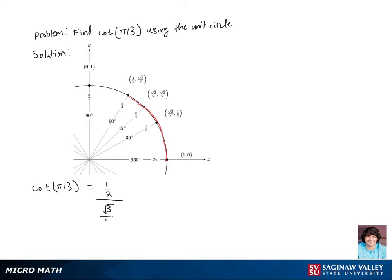Dividing by fractions is the same as multiplying by its reciprocal, so we'll get two over two root three. We can cancel out some twos here, so we're left with one over root three.